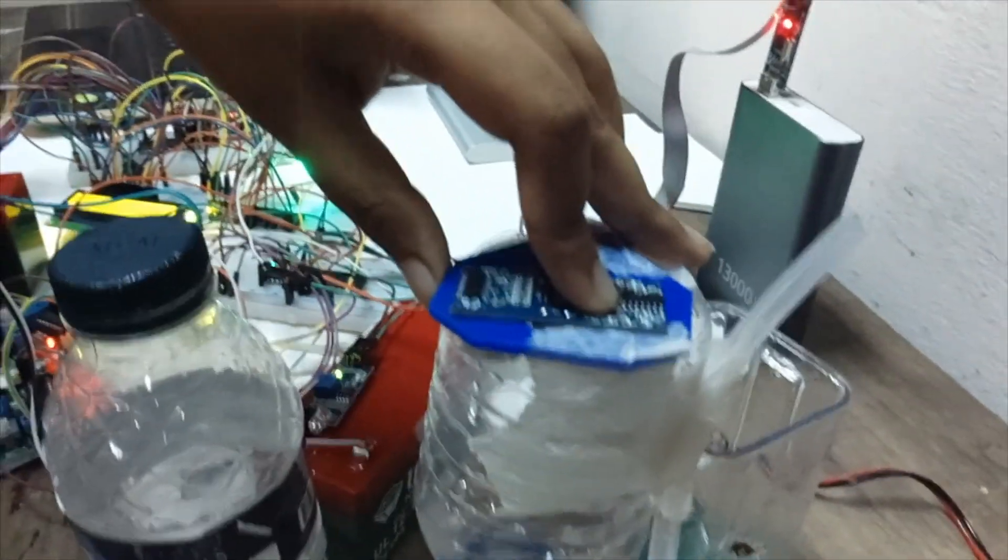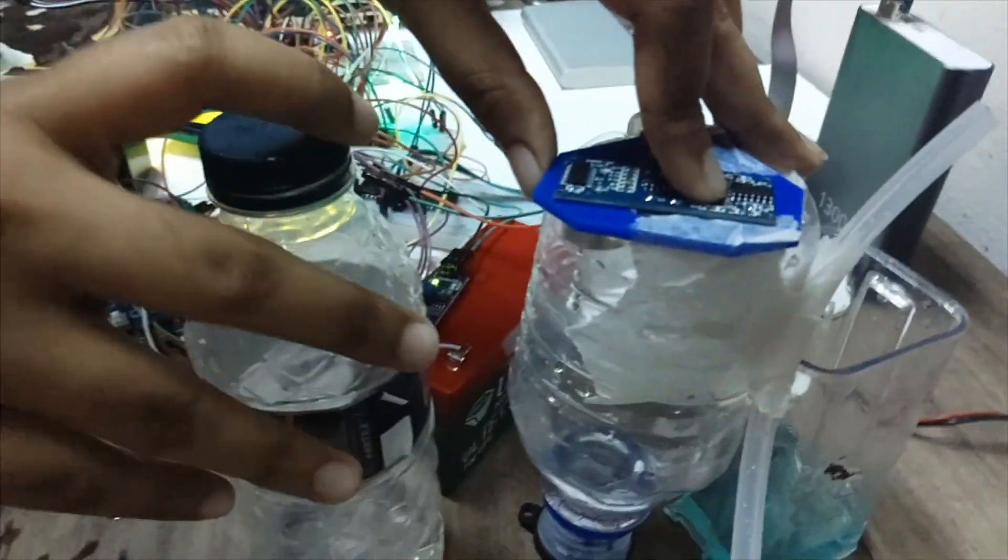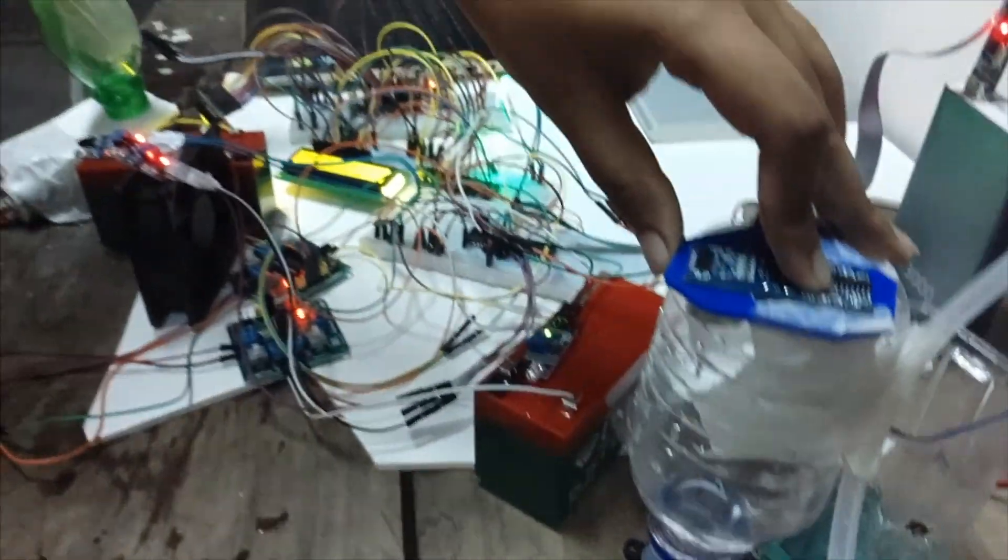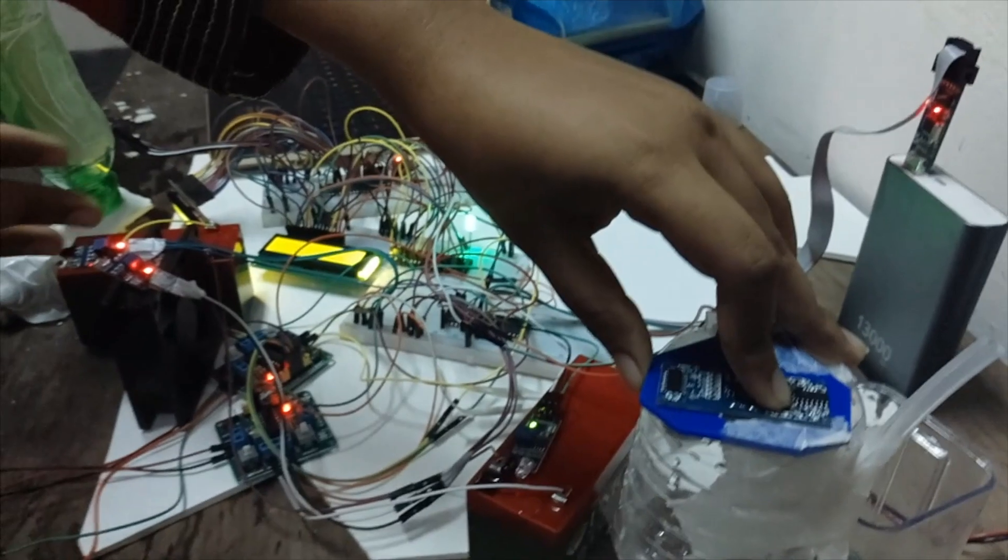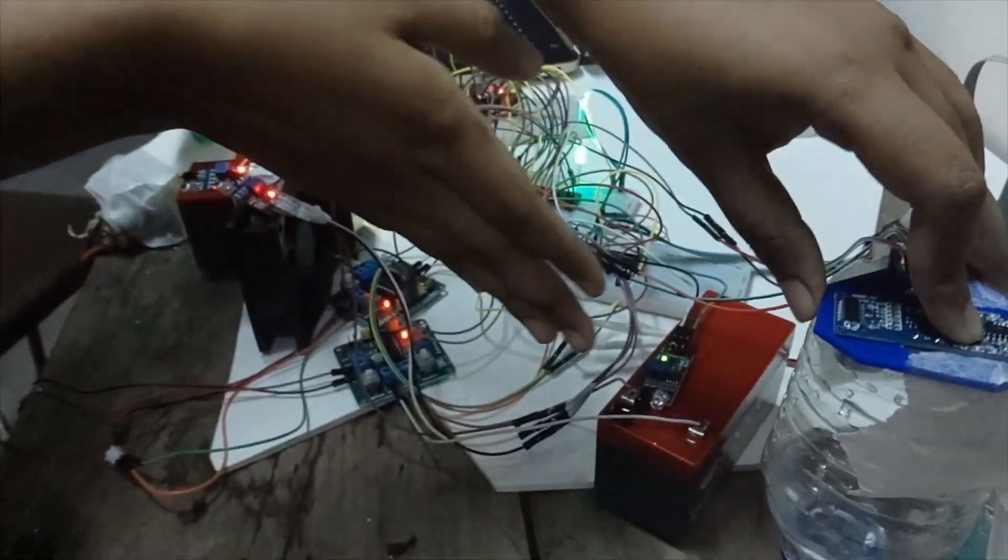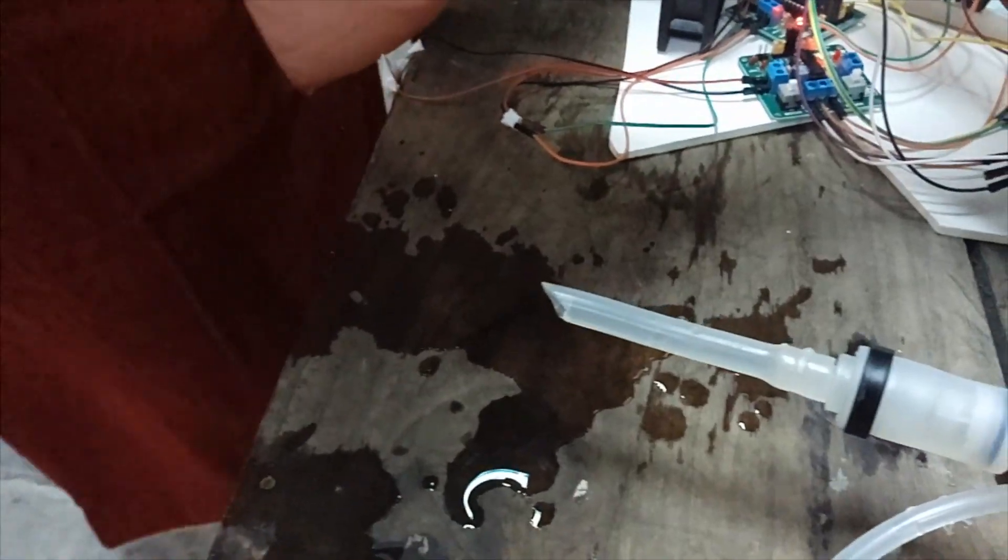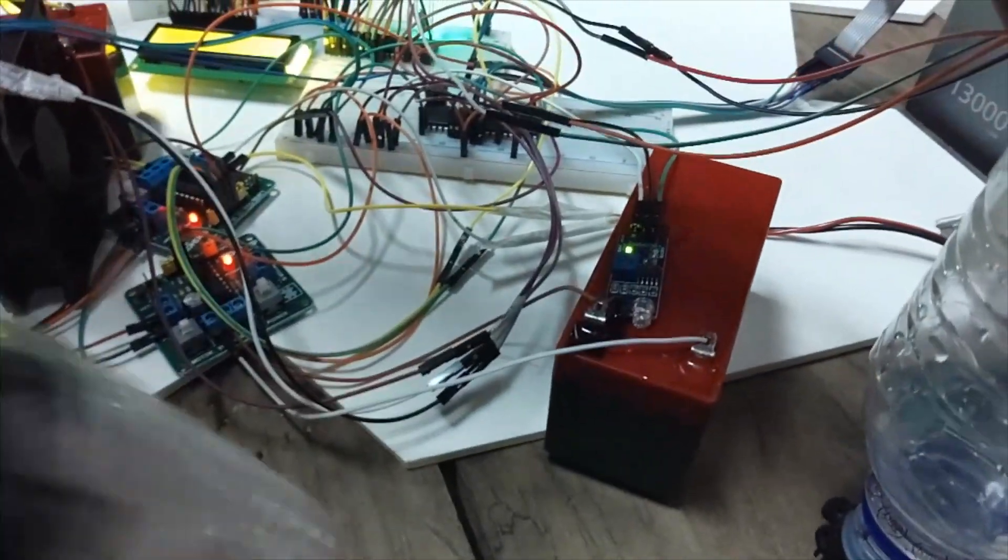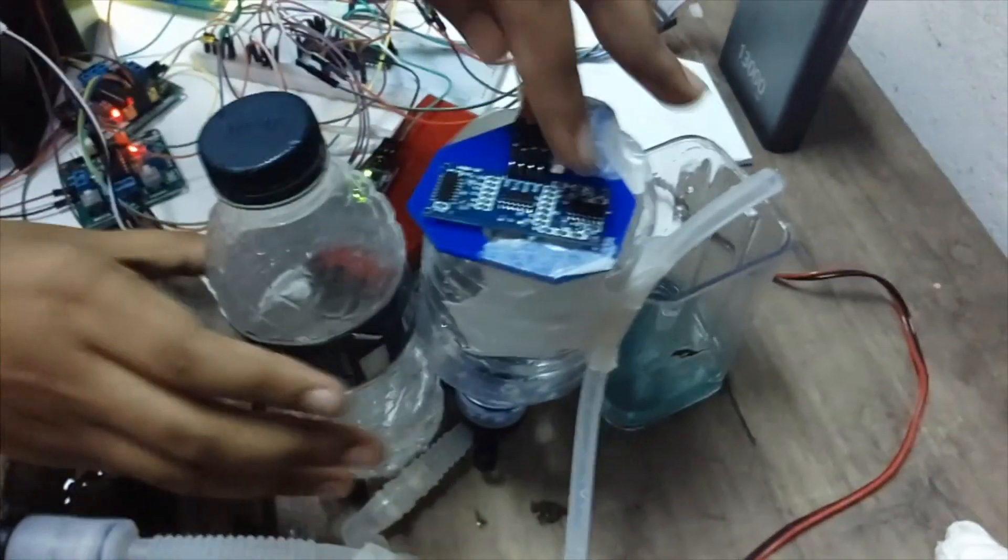So we are using an IR sensor to detect the hand motion. When we place our hand below the IR sensor, water will pour out of this. Like this. So this was the IR sensor. This is the water dispenser.